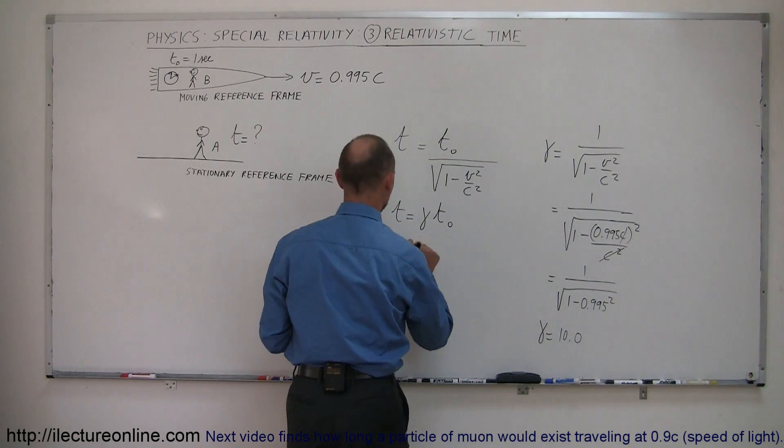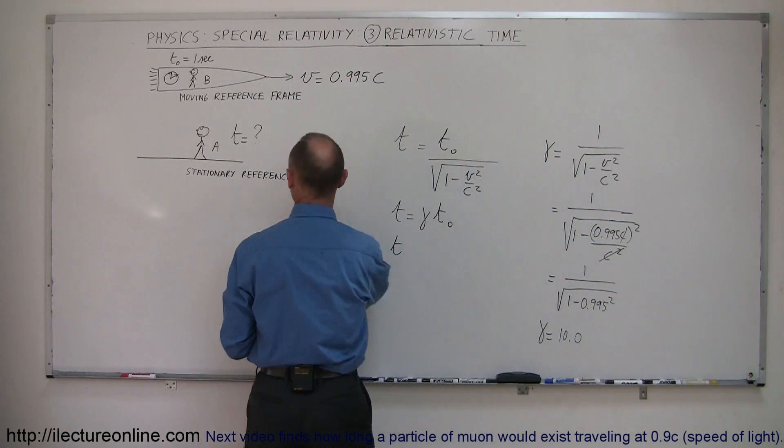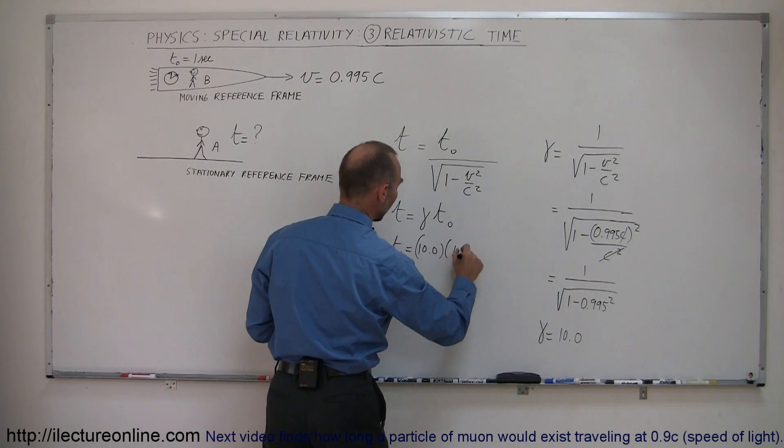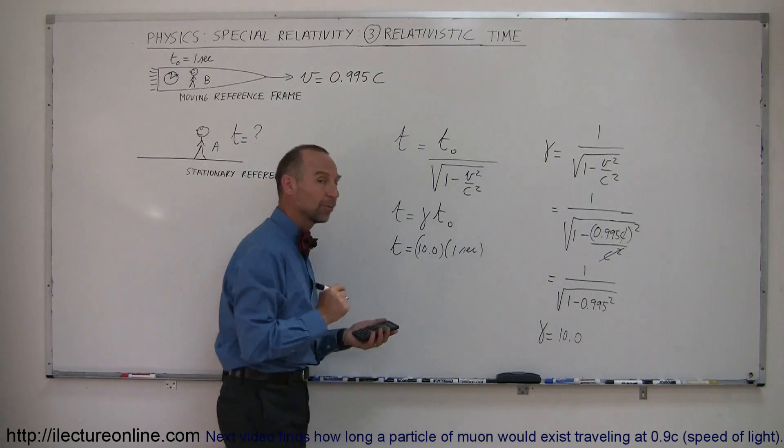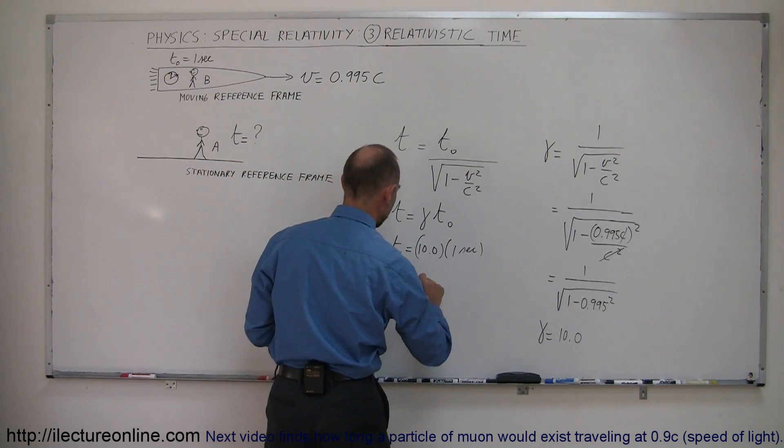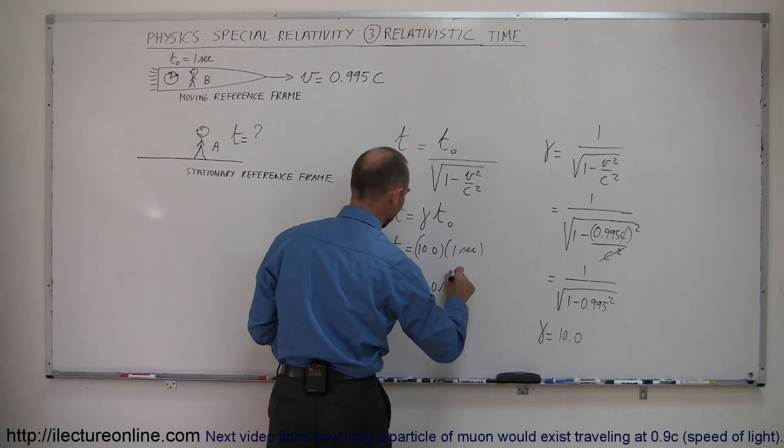Then we plug that in: the time as observed by A equals gamma, which is 10.0, times 1 second, which is the time observed by Observer B. So the time observed by Observer A is 10.0 seconds.